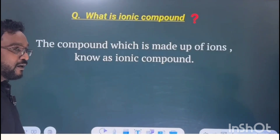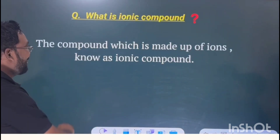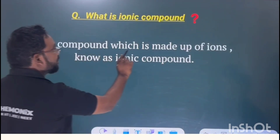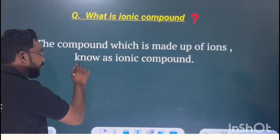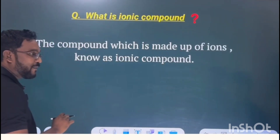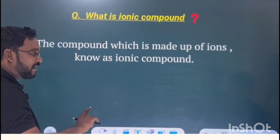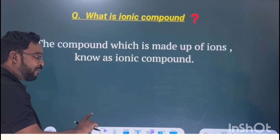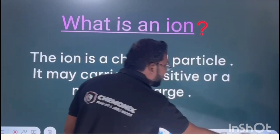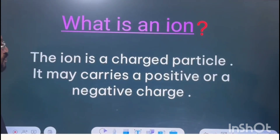Do you know what is an ionic compound? No, sir. I will tell you. Don't worry. The compound which is made up of ions is known as an ionic compound. The compound which is made up of ions is called an ionic compound. The next question is: what are ions?